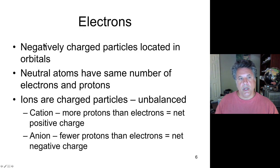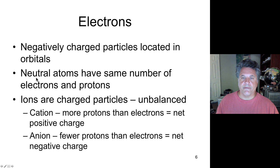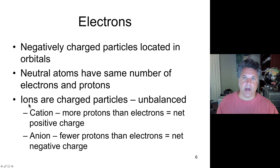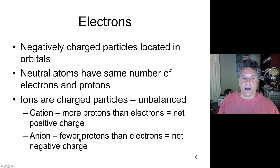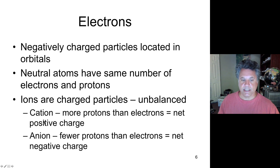Electrons are negatively charged particles located in orbitals around the nucleus. For atoms that have the same number of electrons and protons, those atoms are neutral because the charges of the electrons balance the charges of the protons. However, atoms can lose electrons. If an atom loses an electron, it becomes a cation — it has more protons than electrons and therefore a net positive charge. An anion is negatively charged because it has gained an electron, giving it fewer protons than electrons and a net negative charge. Anion: negatively charged; cation: positively charged.